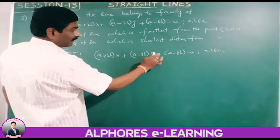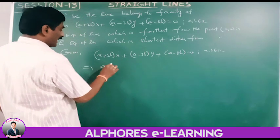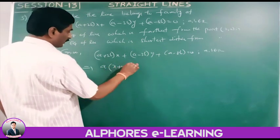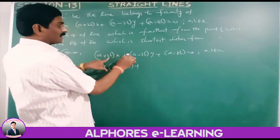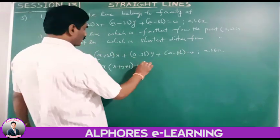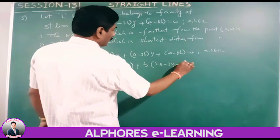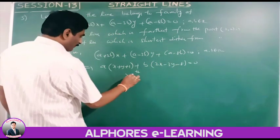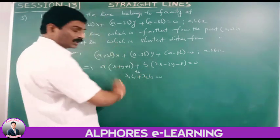Expanding: the terms with 'a' give a(x plus y plus 1), and the terms with 'b' give b(2x minus 3y minus 8) equals 0. So the family is a(x plus y plus 1) plus b(2x minus 3y minus 8) equals 0, which is in the form lambda-1·l1 plus lambda-2·l2 equals 0.